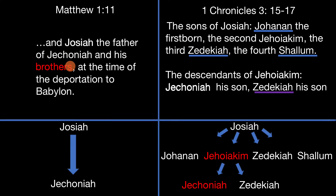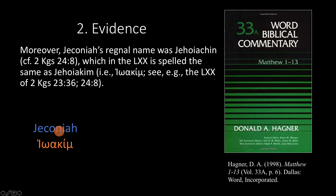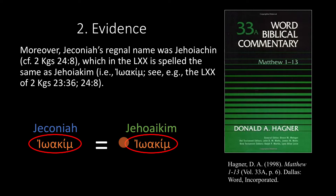That's the first piece of evidence. The second piece of evidence, in my opinion, is even more convincing. Hagner writes: 'Moreover, Jeconiah's regal name was Jehoiakim, which in the Septuagint is spelled the same as Jehoiakim.' So in the Septuagint, the Greek spelling of Jeconiah's regal name is the same as Jehoiakim. This explains why someone would accidentally replace Jeconiah's name with Jehoiakim — especially in Greek, when the names are the same or very similar in spelling.